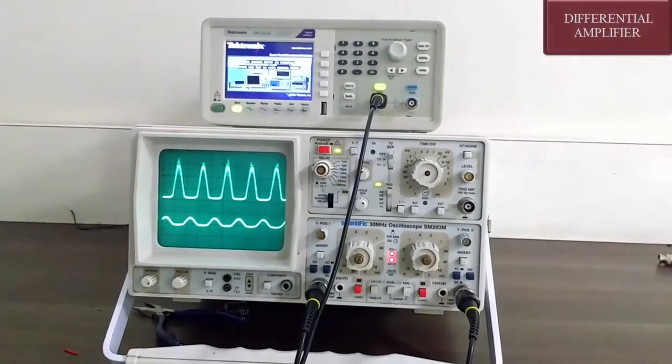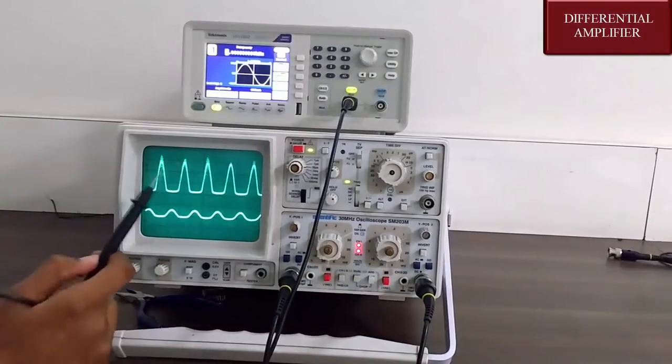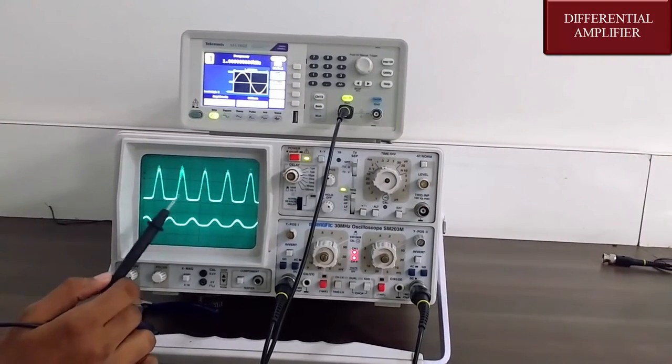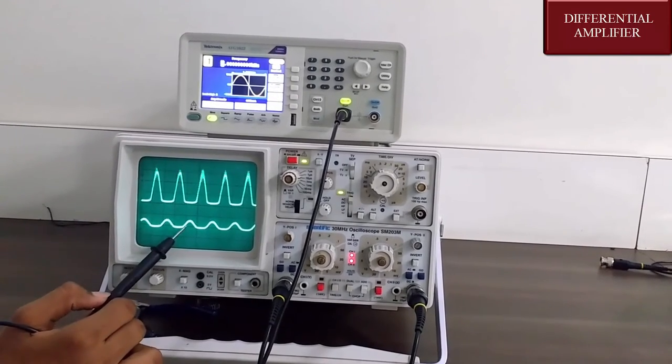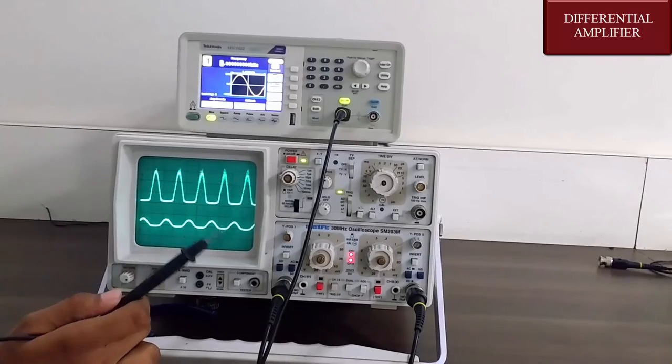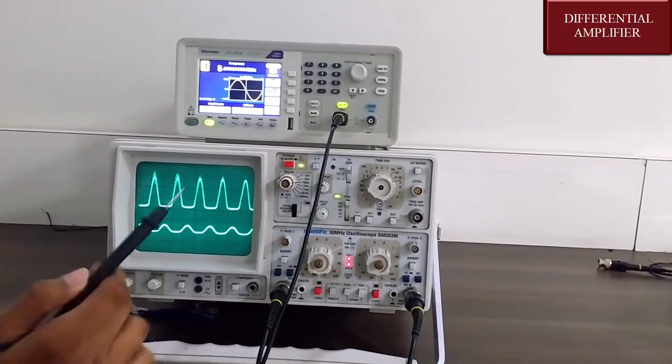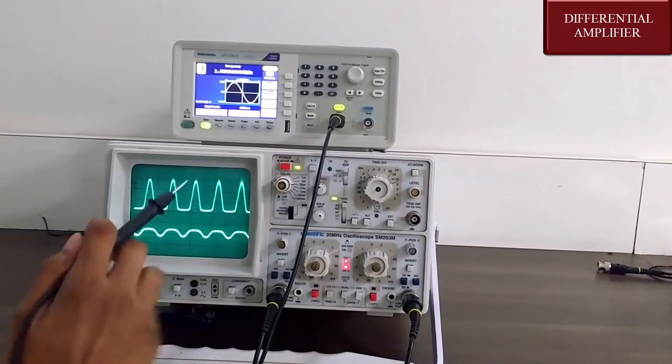On the CRO we can see the different outputs from transistor 1 and transistor 2. The upper signal is the output of transistor 1 whereas the lower signal is the output of transistor 2. In a differential amplifier we find the difference between the two signals of the two transistors, that is signal 1 minus signal 2. For this we invert the second signal and then add it with the first signal.